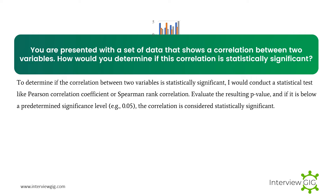You are presented with data showing a correlation between two variables — how would you determine if this correlation is statistically significant? I would conduct a statistical test like Pearson correlation coefficient or Spearman rank correlation, evaluate the resulting p-value, and if it is below a predetermined significance level (e.g., 0.05), the correlation is considered statistically significant.